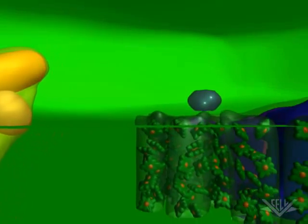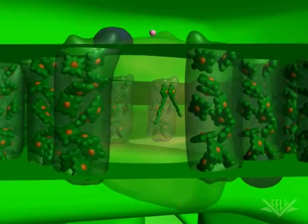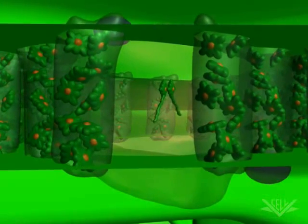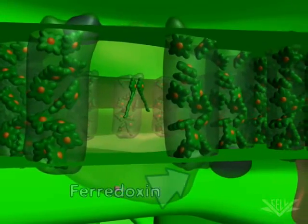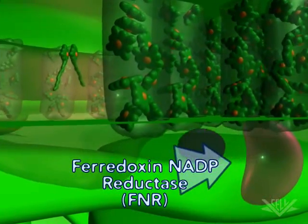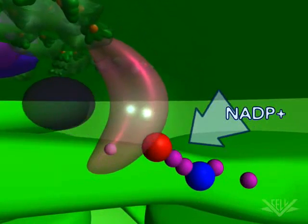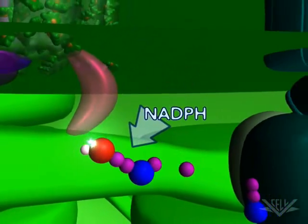Next, the electrons are transferred from plastocyanin to the photosystem I complex. It is here that photons again energize each electron and propel their transfer to ferridoxin. Ferridoxin then transfers the electrons to the ferridoxin NADP reductase, also known as FNR. After two electrons are transferred to FNR, NADPH is made by adding the two electrons and a hydrogen ion to NADP.